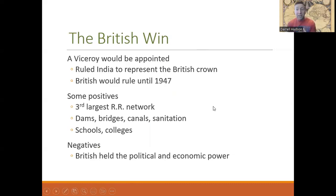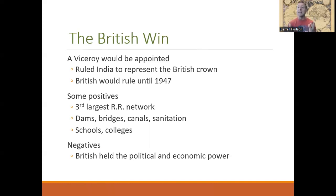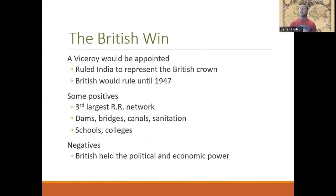After about a year, the British win because of the sheer size of their military force, and they put down the rebellion. Once that is done, a viceroy is appointed to control India — similar to a governor of a state — who represents the British Crown. They are going to rule over India until 1947, when the independence movement creates a breakaway from Britain.